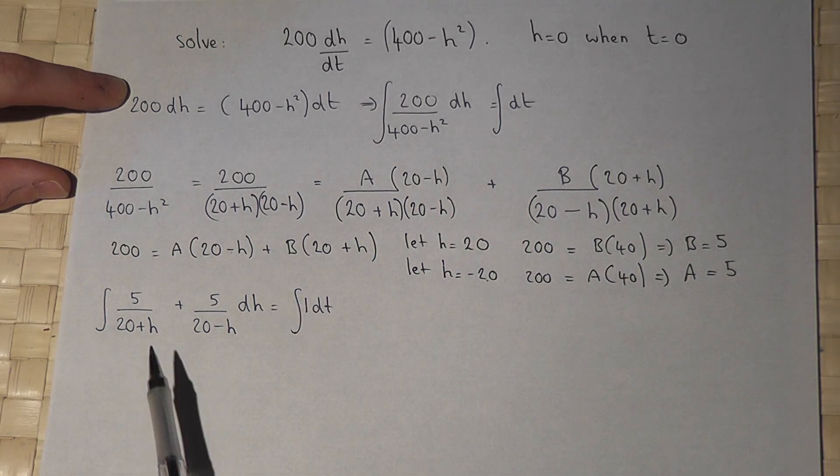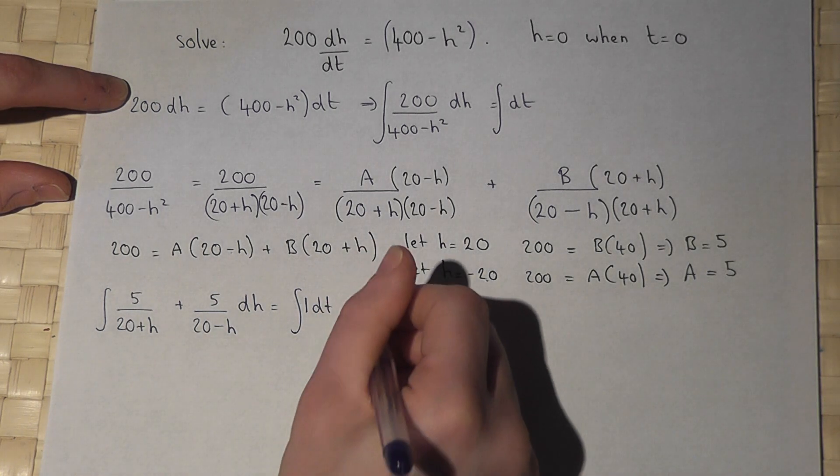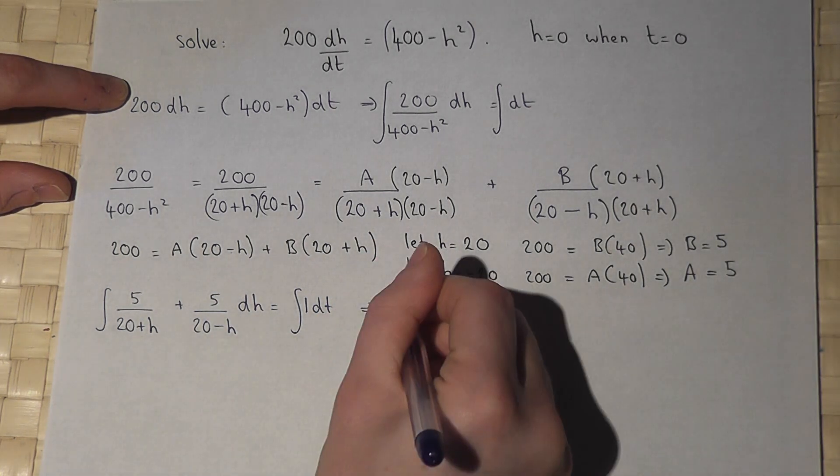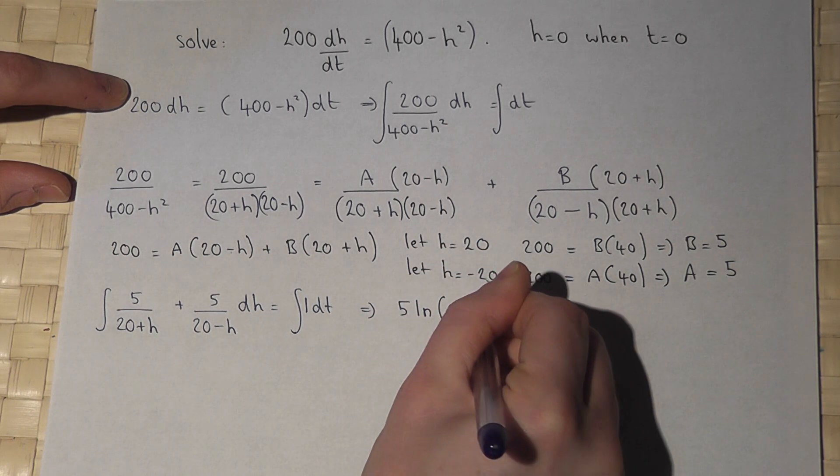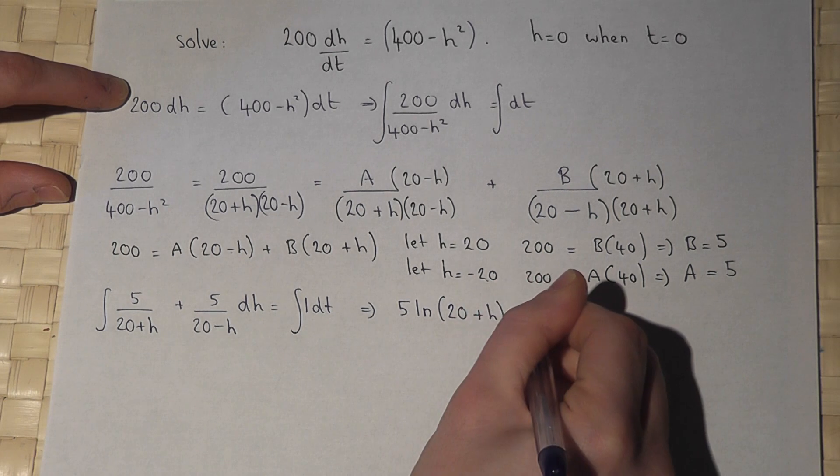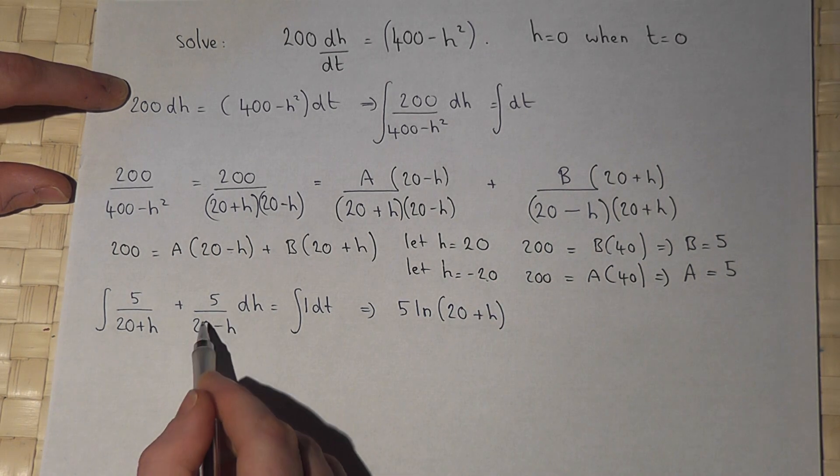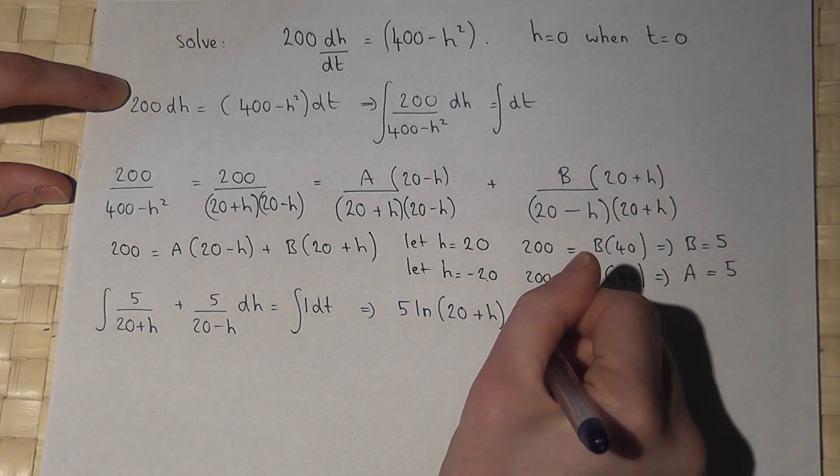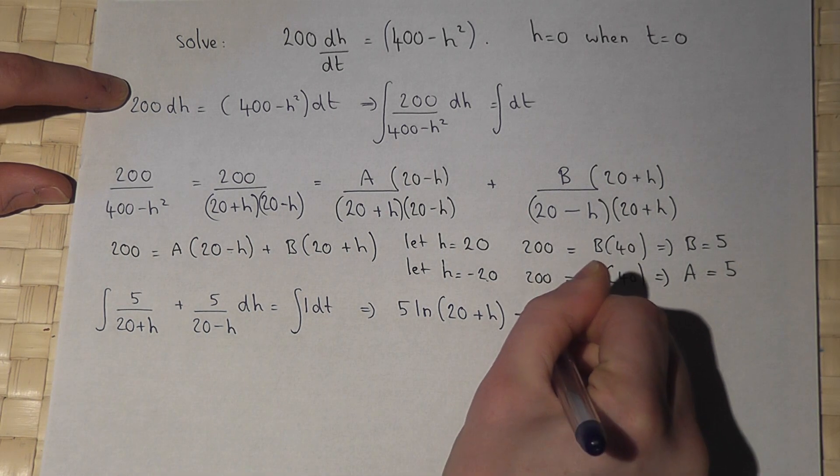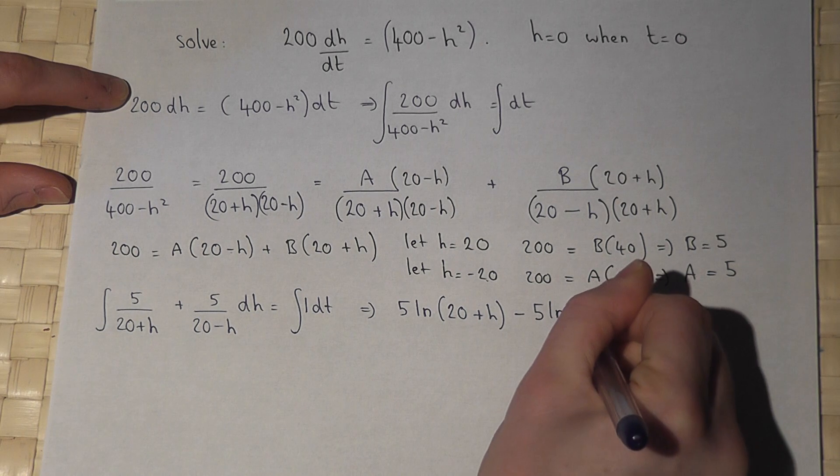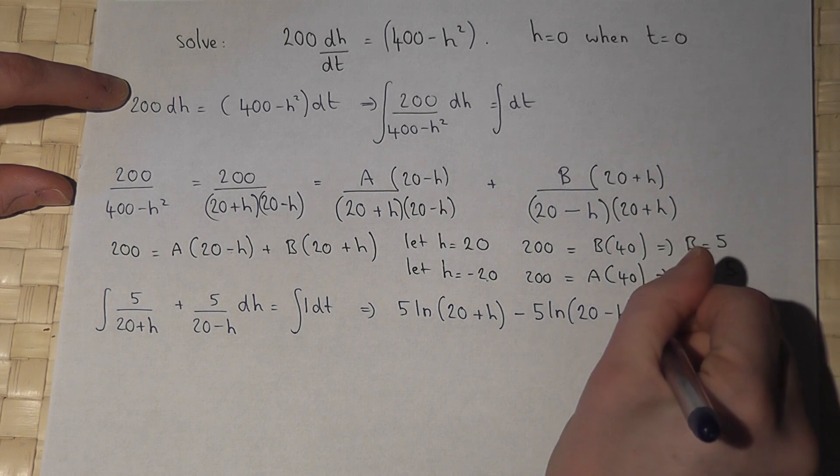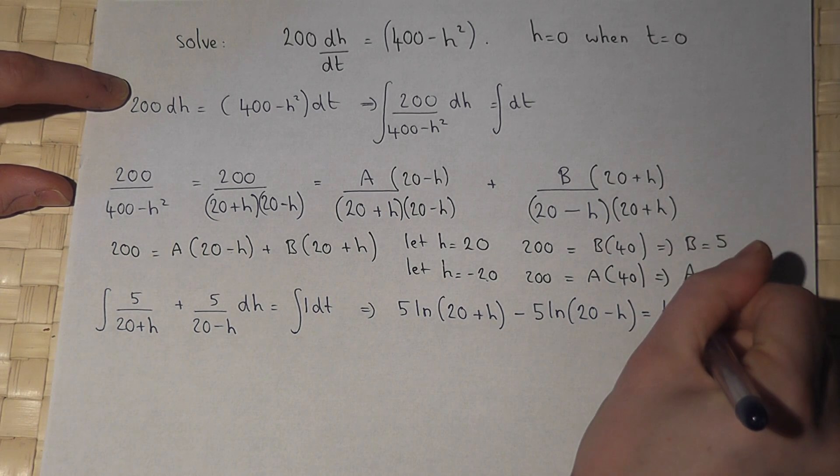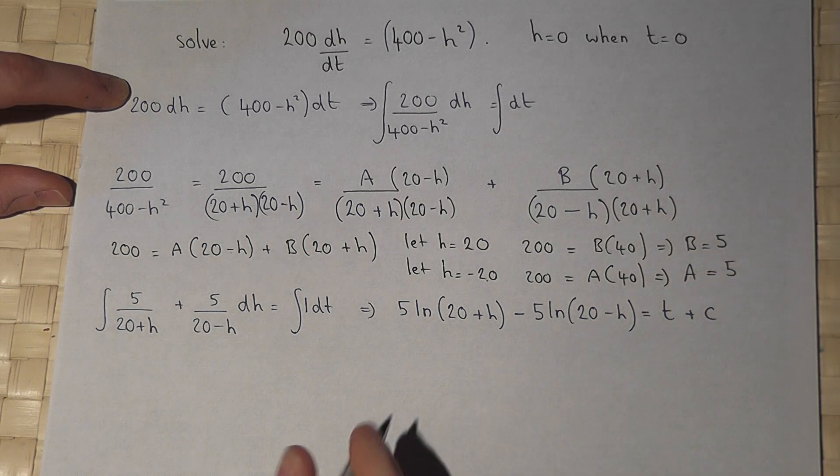I can now integrate all of these terms. 5 over 20 plus h integrates to 5 ln 20 plus h. 5 over 20 minus h integrates to minus 5 ln 20 minus h. And 1 integrates to t plus the constant of integration c.